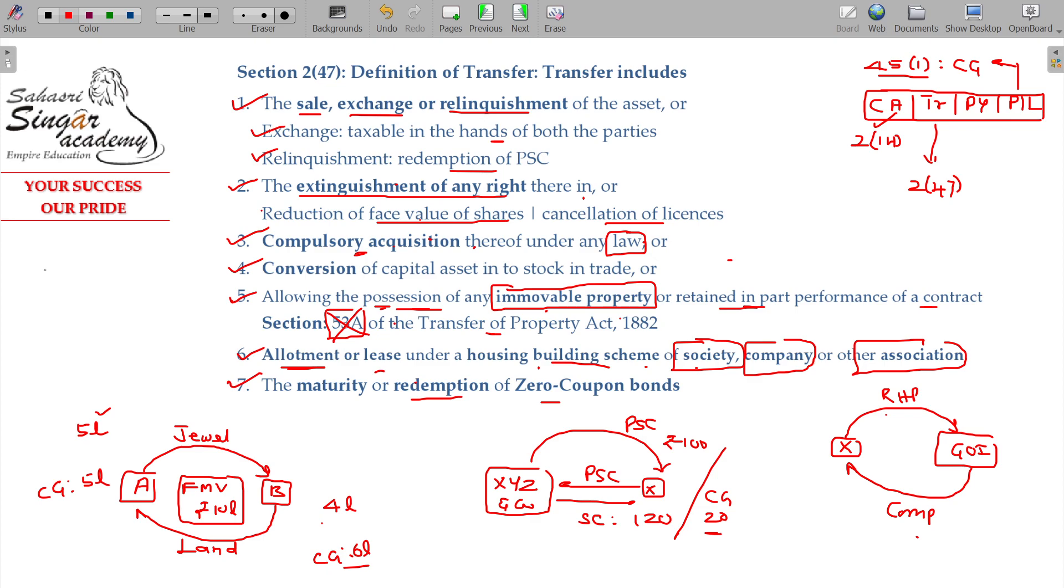Zero coupon bond we have already studied under PGBP Section 36 Class 1 Subclass 3A. So upon zero coupon bond, suppose the face value is 100 rupees, issue price being only 40. If you buy for 40 rupees, after 5 years you get 100 rupees. The difference, the discount, will be amortized over the period under Section 36.